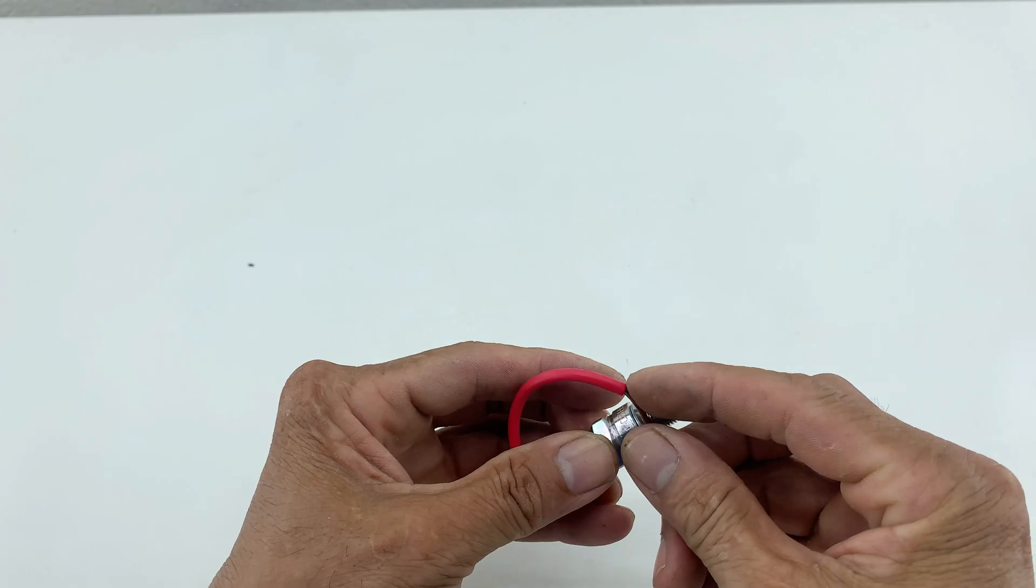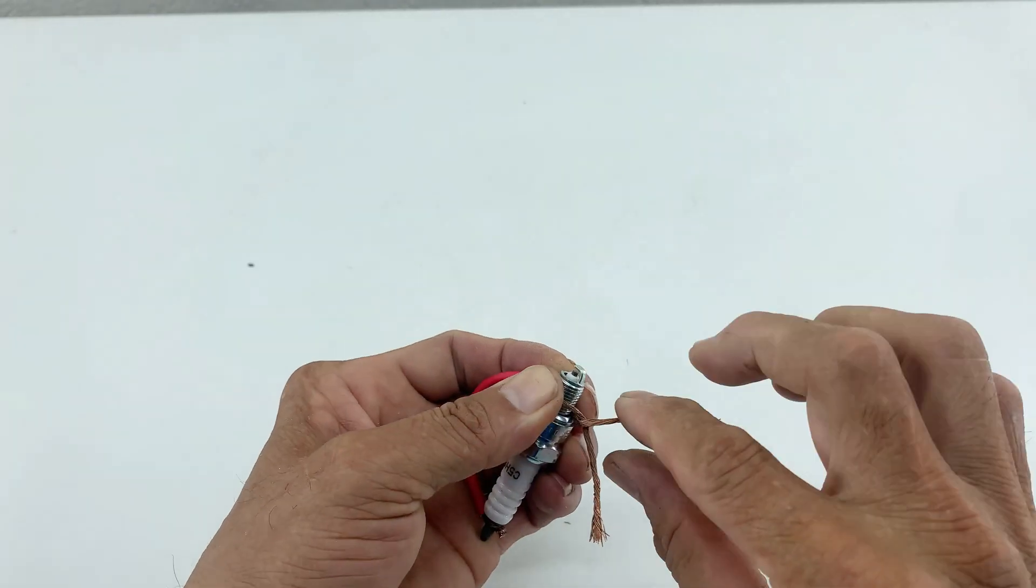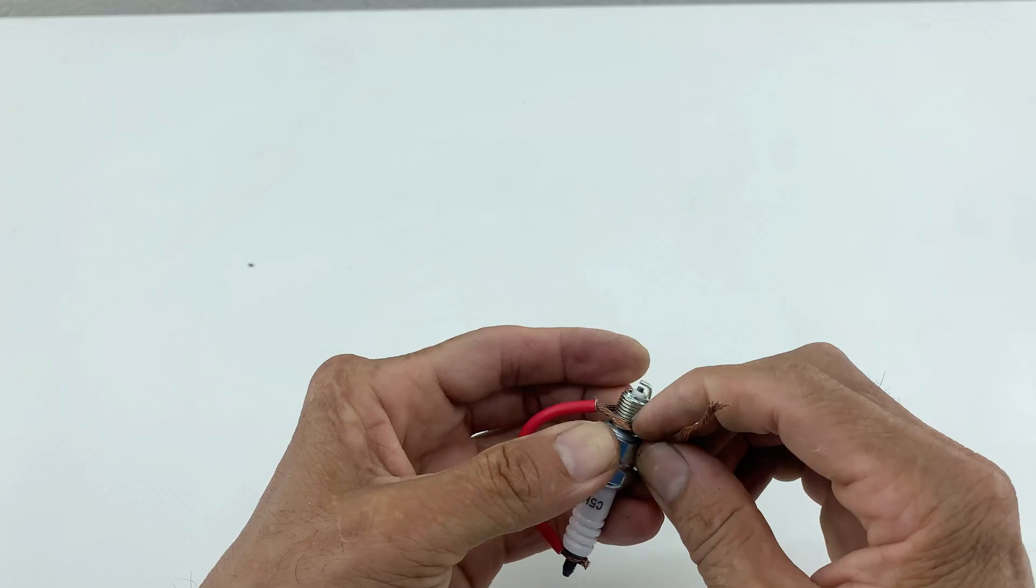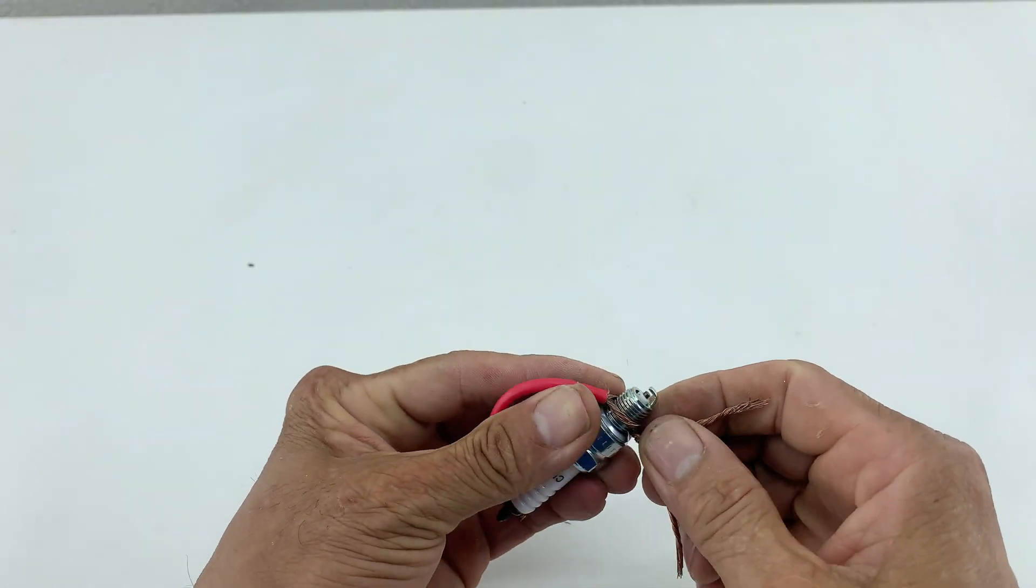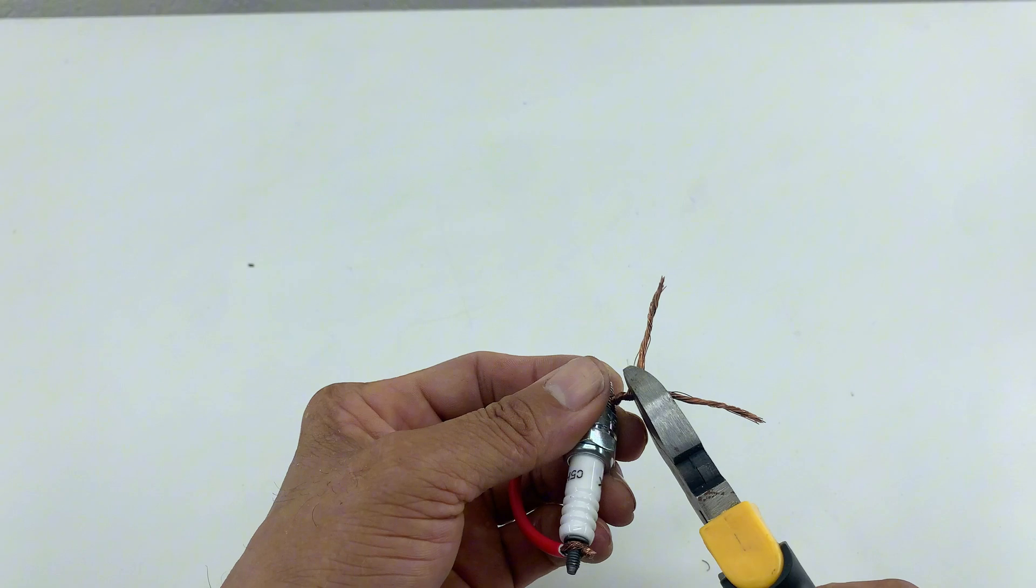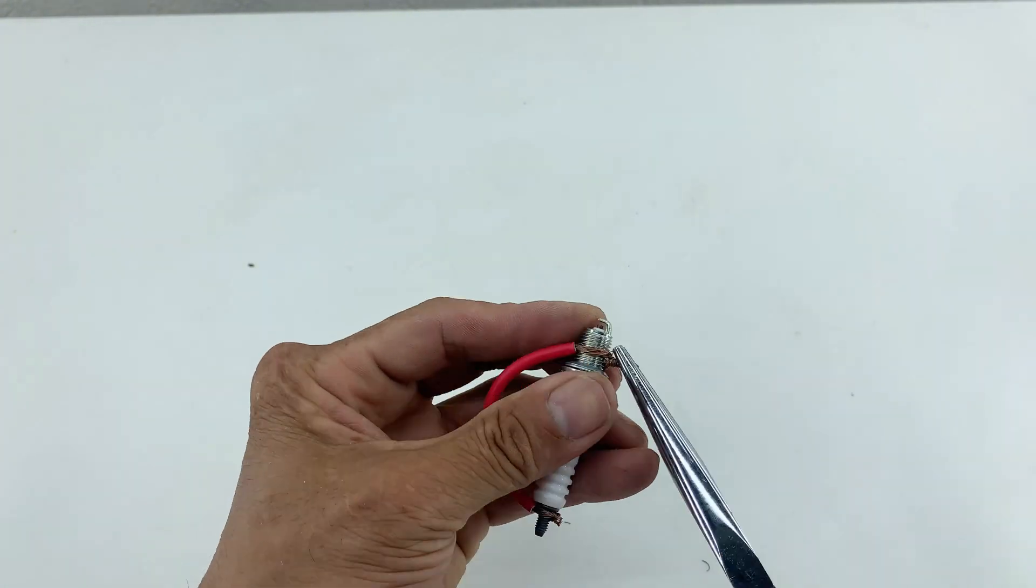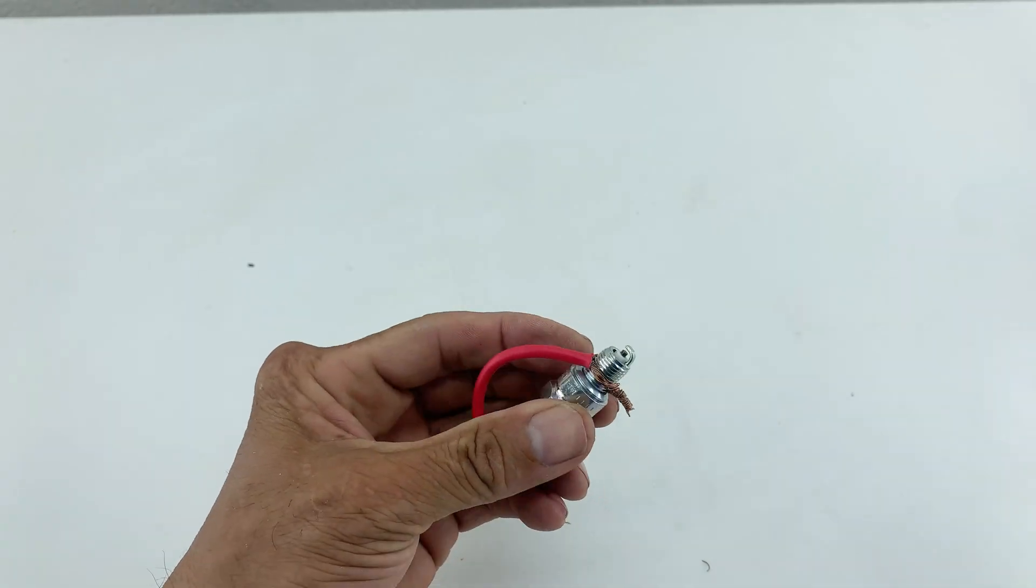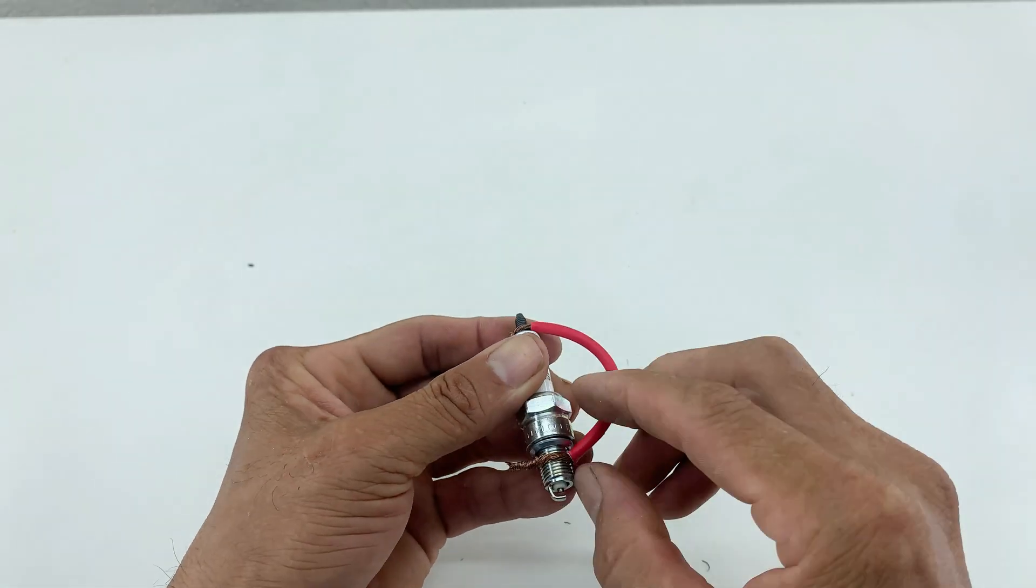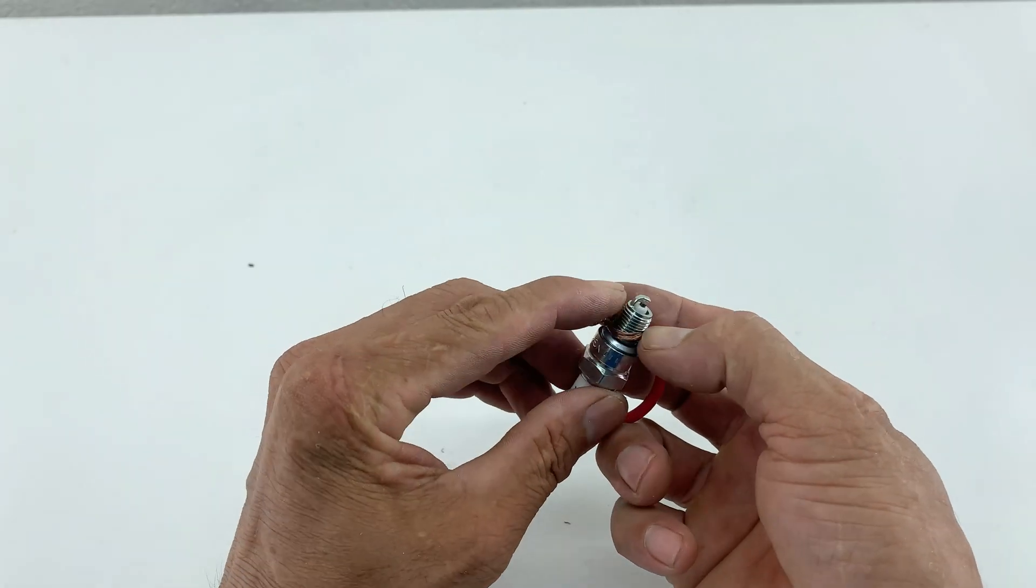With the remaining stripped end of the red wire, I twisted the copper core around the threaded part of the spark plug to create a secure connection. After securely fastening the electrical wire, I trimmed off the excess to keep the connection neat and ensure safety. I'm using my pliers to help twist and crimp the wire tightly, ensuring there's excellent contact and no loose ends.